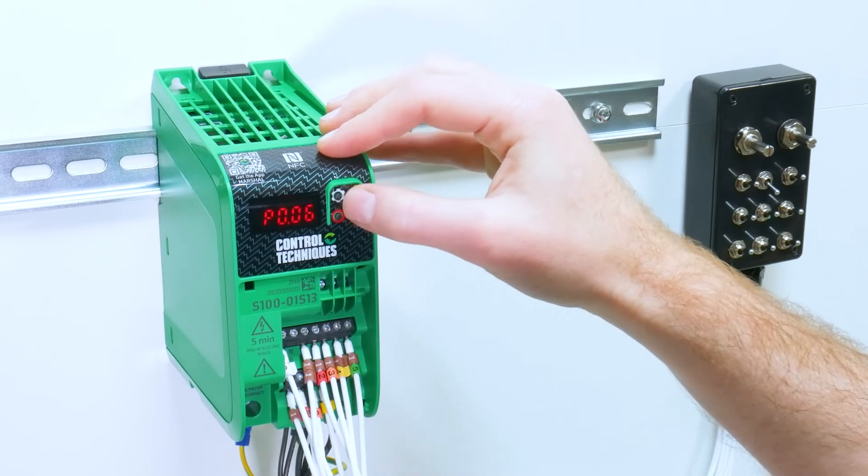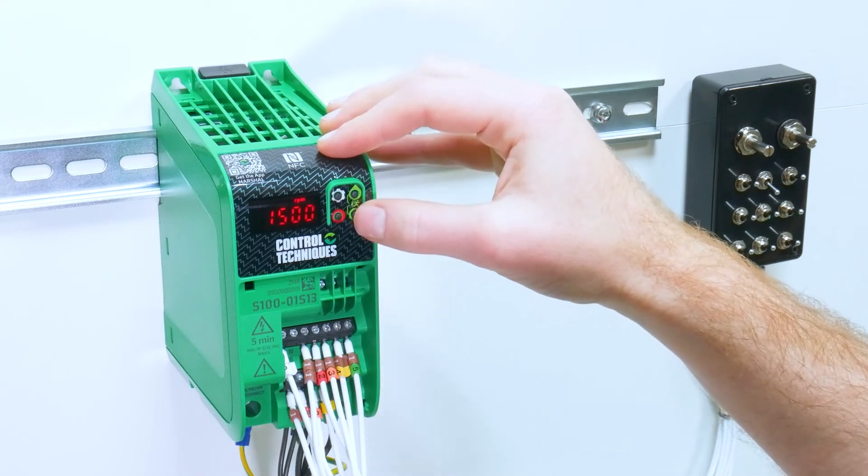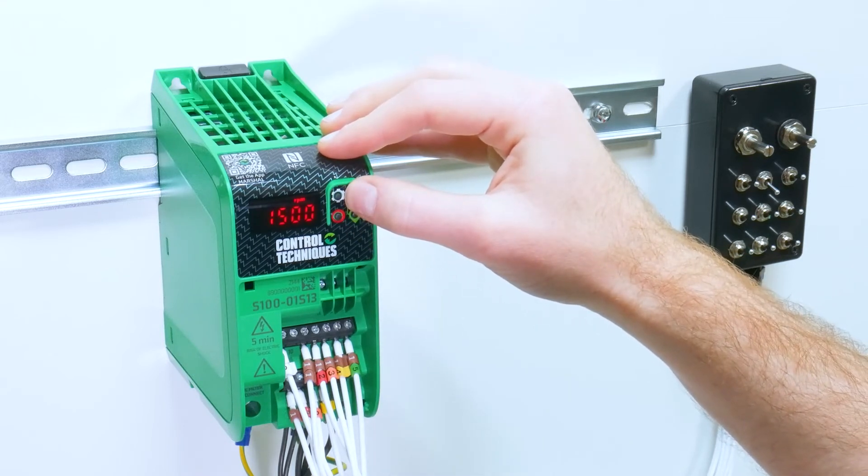Parameter 7 is our motor rated speed. I can scroll across to the hundredth digit by holding the up key.